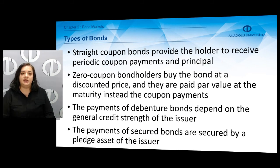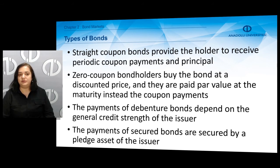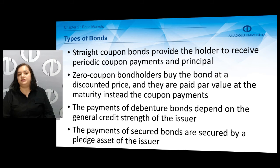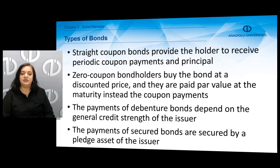There are other types of bonds such as straight coupon bonds or zero coupon bonds. Straight coupon bonds provide the holder periodic coupon payments and principal at maturity, whereas zero coupon bond holders buy the bond at a discounted price and are paid par value at maturity — there are no coupon payments. The payments of debenture bonds depend on the general credit strength of the issuer, while payments of secured bonds are secured by pledged assets of the issuer.